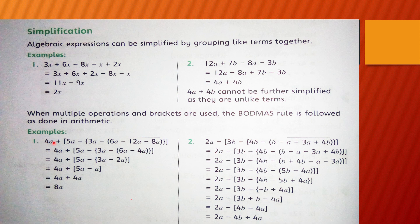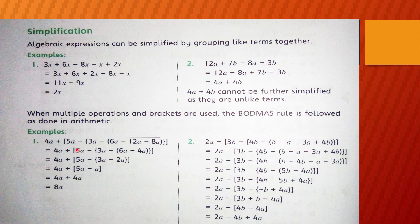Example number 1 from the book: 4A plus, big bracket open, 5A minus, curly bracket open, 3A minus, small bracket open, 6A minus, bar bracket over 12A minus 8A, bar bracket close, small bracket close, curly bracket close, big bracket close. Innermost bracket is the bar bracket; small bracket is also called parenthesis.